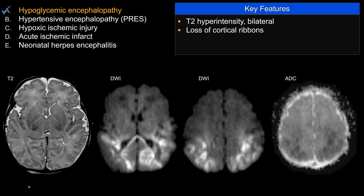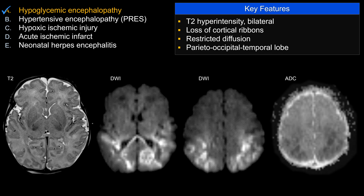On T2 weighted sequence, you can see there's abnormal hyperdensity associated with the posterior parietal lobe, posterior temporal lobe, and occipital lobe. There's a loss of cortical ribbon. Compare that to the very sharp, nicely defined cortical ribbon anteriorly. On diffusion, you can see clearly restricted diffusion involving the same area — the posterior aspect of the temporal lobe, occipital lobe, as well as parietal lobe. So this is a good pattern for hypoglycemic encephalopathy.